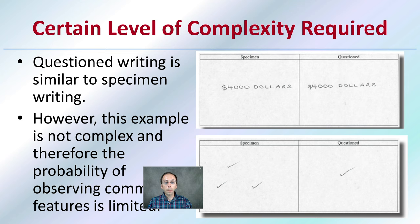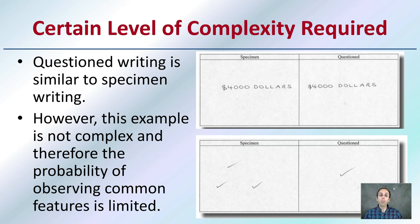So there's a certain level of complexity that's required here. This is where it gets a little bit more interesting and it also becomes frustrating at times. There's questioned writing, similar to the specimen writing. So we have a stock example to compare to and we have the questioned amount. However, this example is not complex and therefore the probability of observing common features is limited. In this example, we only have one little statement here. We have one little symbol made. Very hard to make an identification to any great degree of certainty when you have something very limited as we see here.